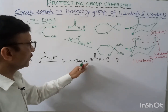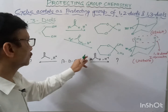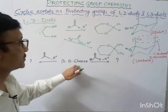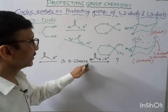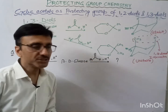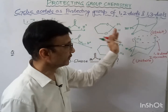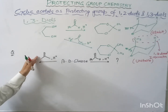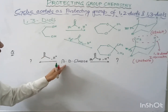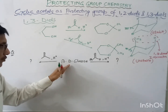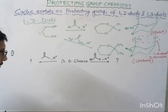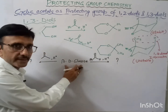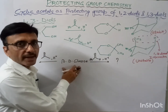Glucose exists in a six-membered ring (pyranose form). If we are using benzaldehyde, we will not get any 1,3-diaxial interaction. Whereas if we are using acetone, then beta-D-glucose in its six-membered pyranose form will have a 1,3-diaxial interaction. So let's first know the structure of beta-D-glucose in both pyranose and furanose form.